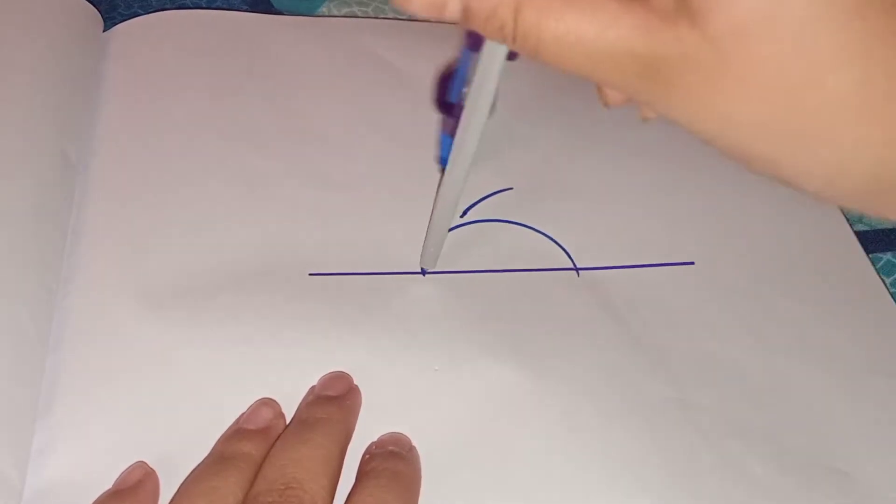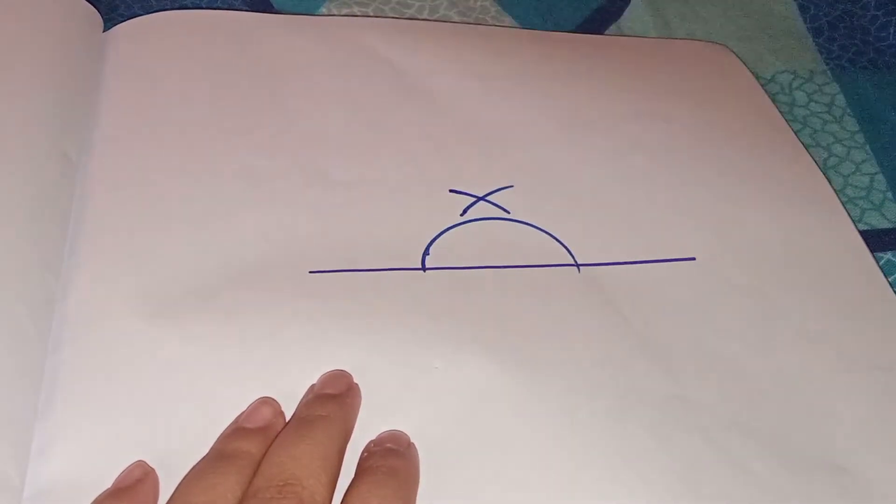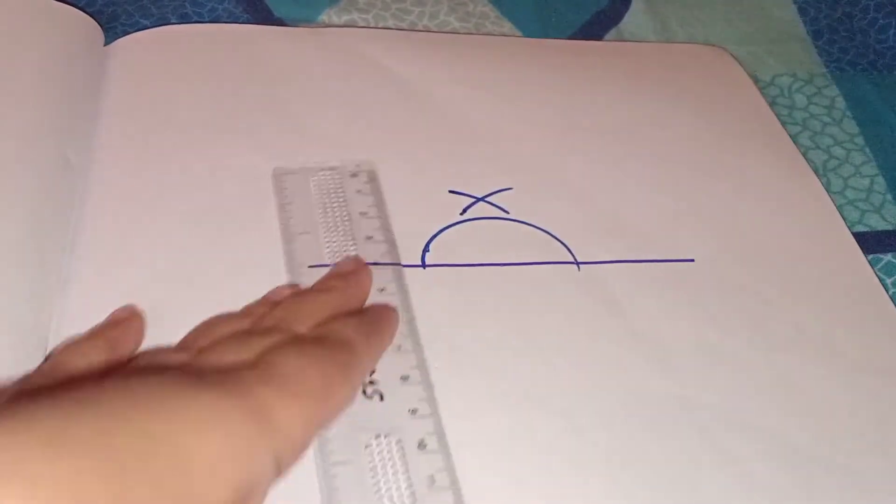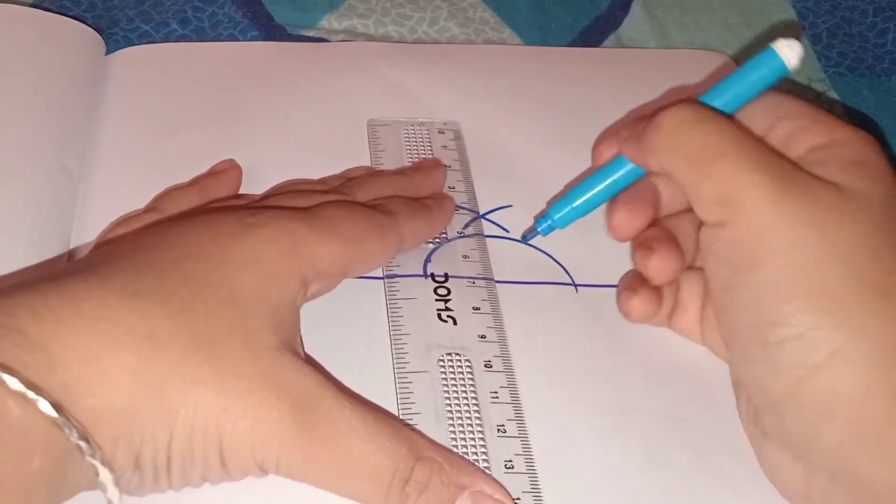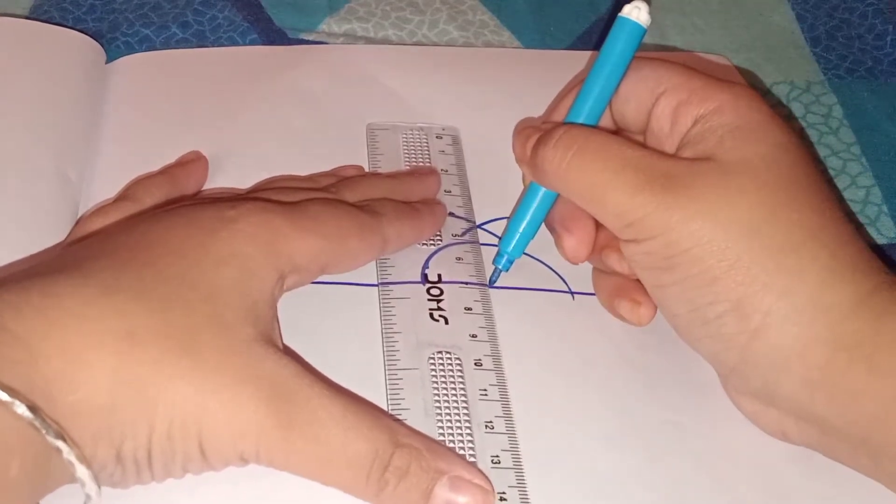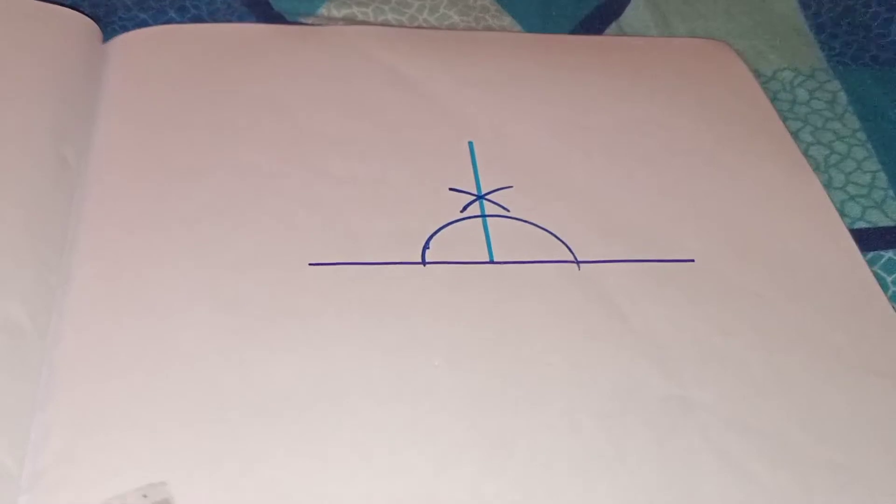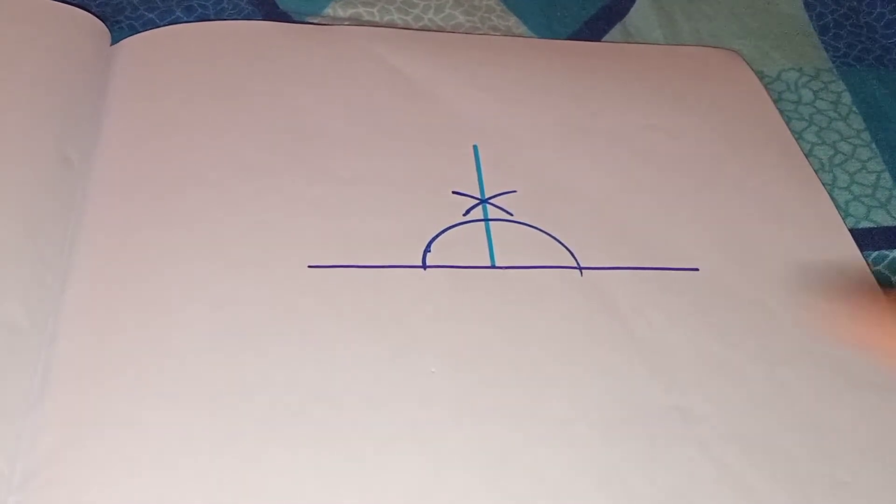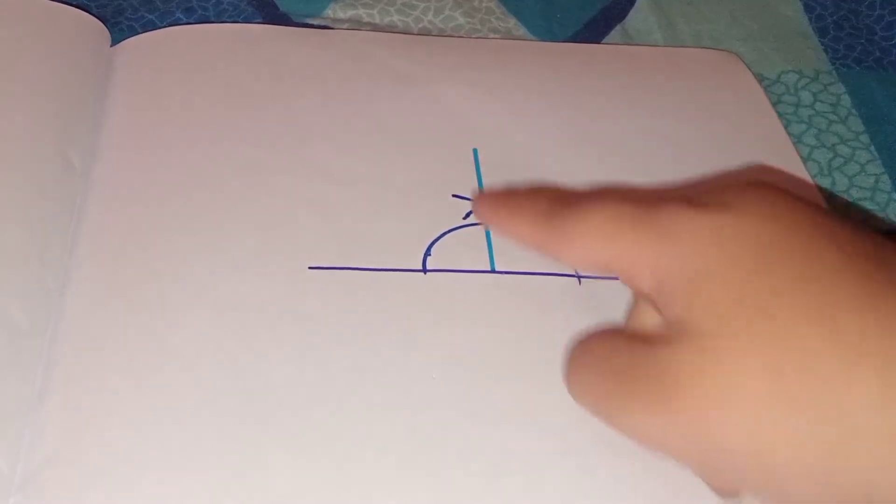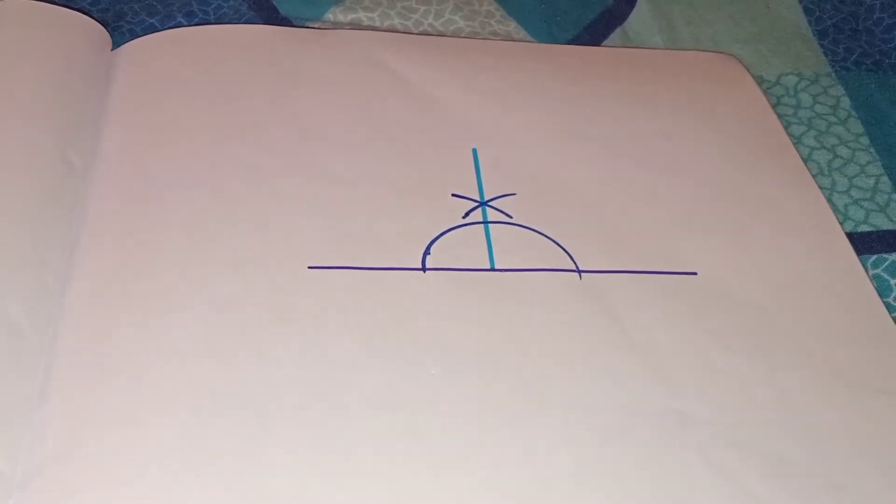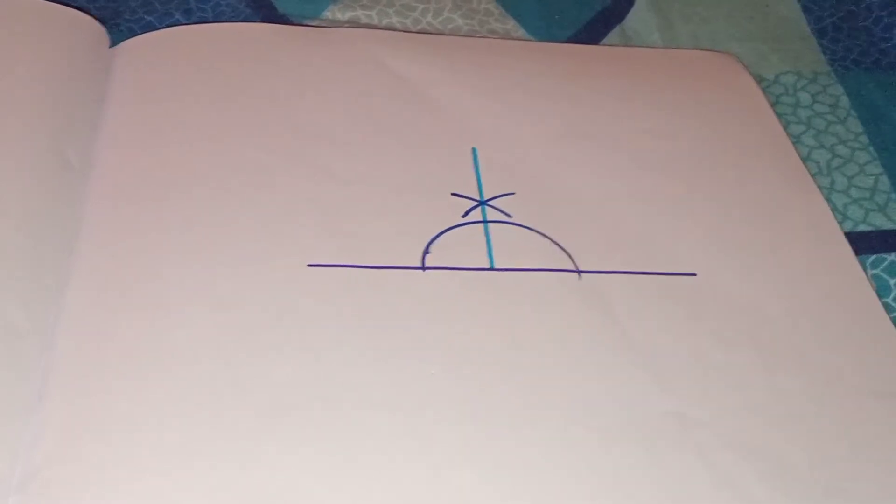Now join this with a line. Take your pencil and draw a straight line. This is your 90 degree, so this perpendicular is the 90 degrees and making two halves of the semicircle.